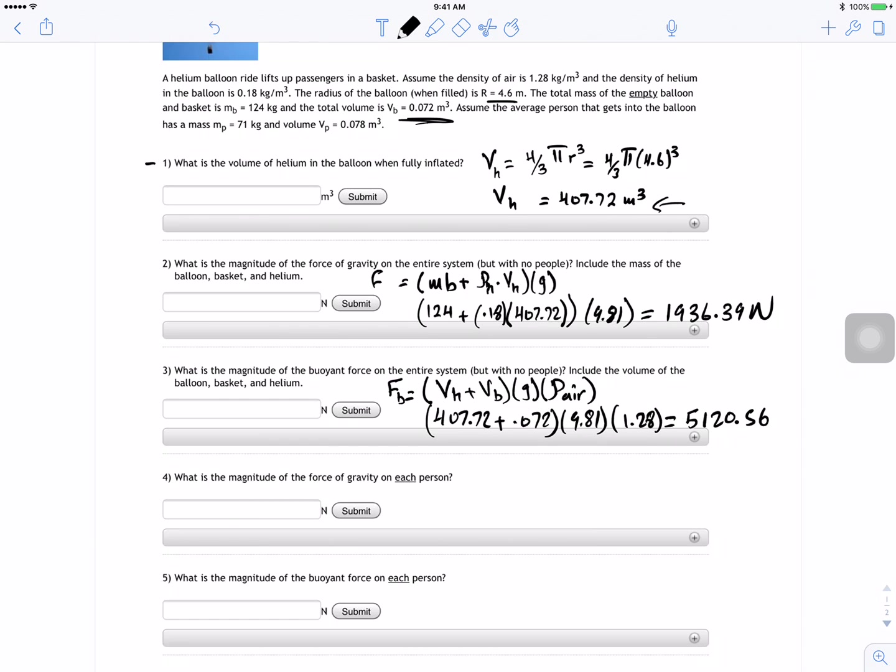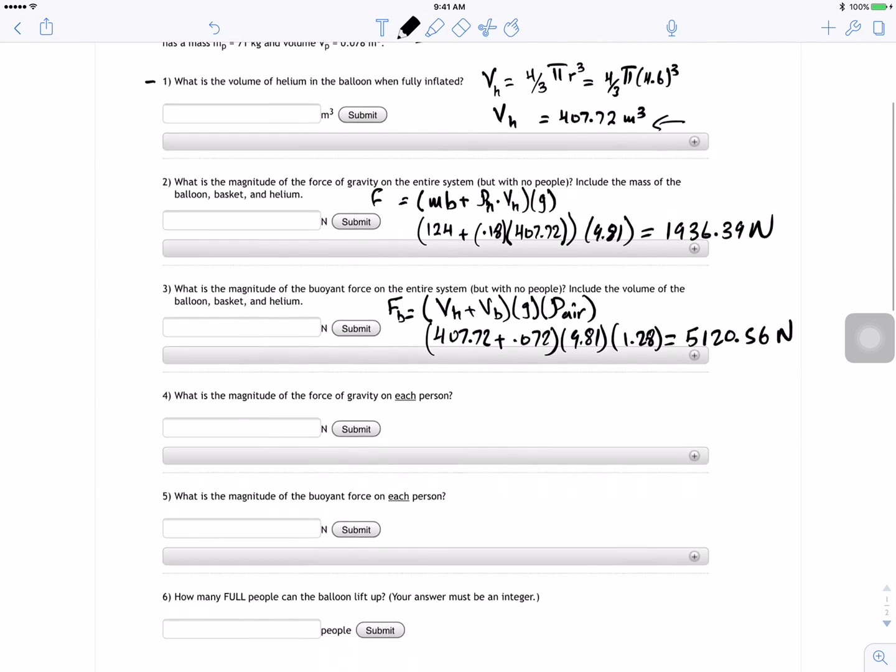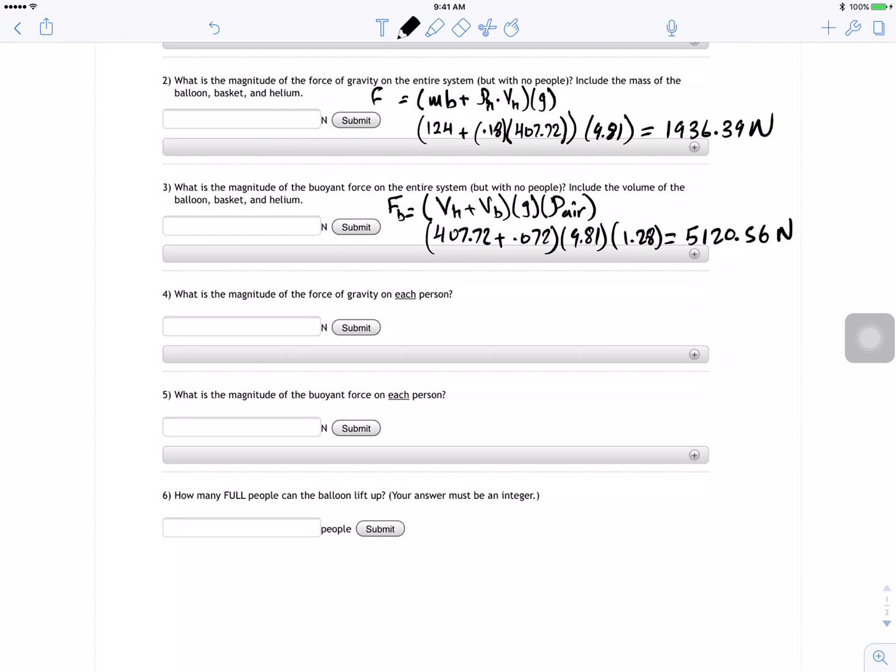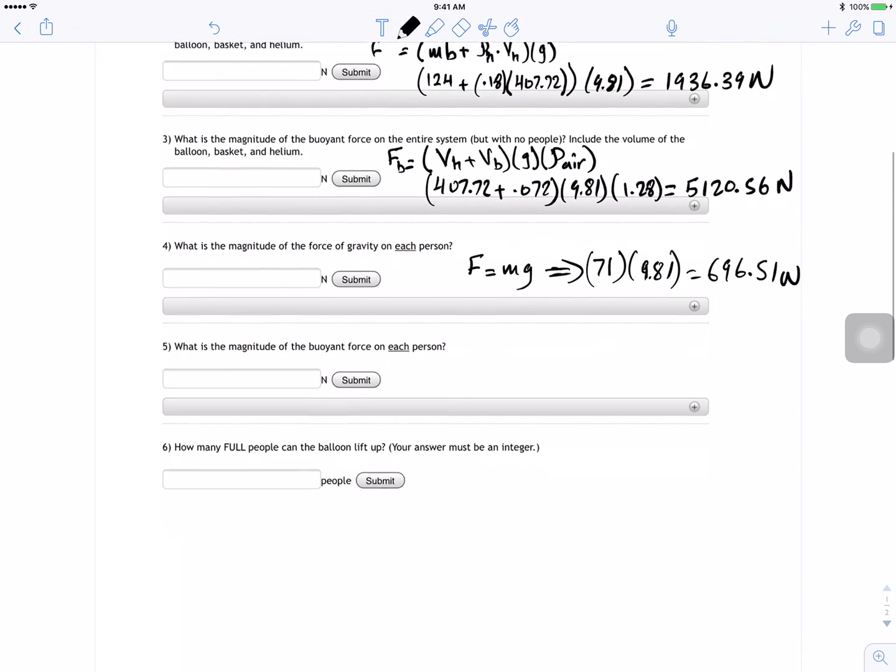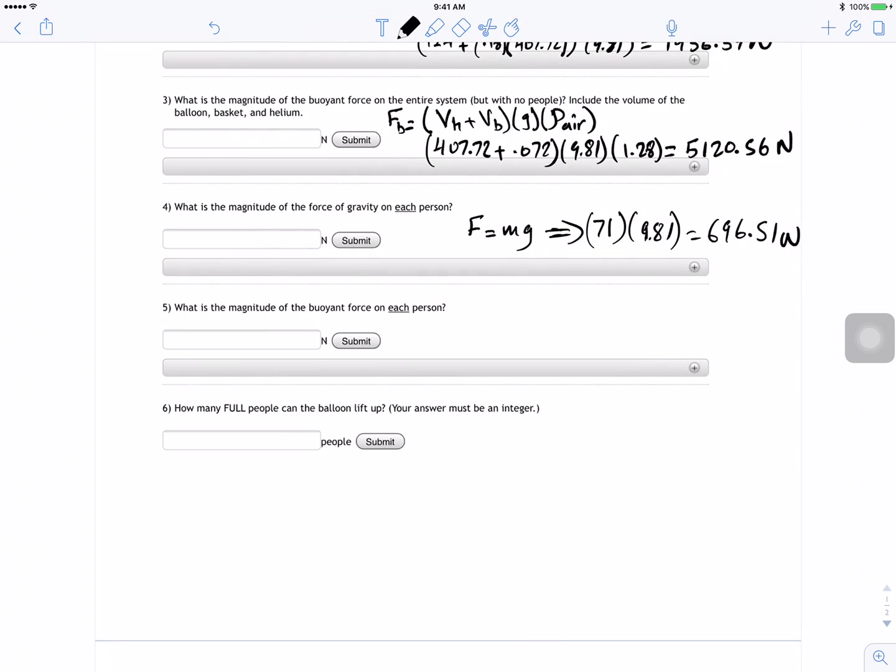Now what is the magnitude of the force of gravity on each person? The force is going to be equal to mg, equal to the mass of each person, 71 for my case, times 9.81. And for this one I got 696.51 Newtons.